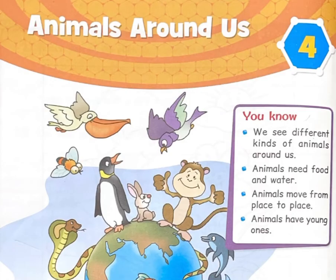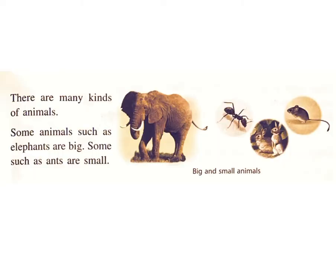Chapter 4: Animals Around Us. We see different kinds of animals around us. Animals need food and water. Animals move from place to place. Animals have young ones. You will learn about domestic and wild animals, movement of animals, and eating habits of animals. There are many kinds of animals.